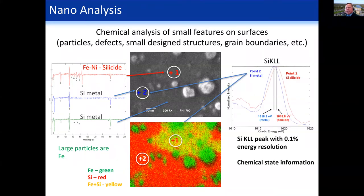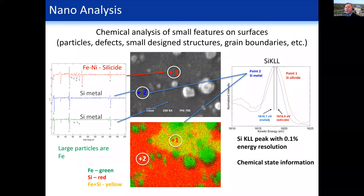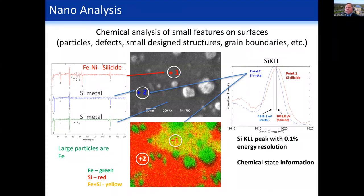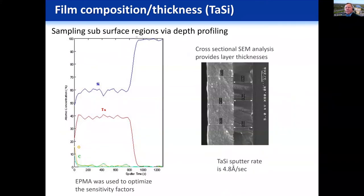Another thing you can do by Auger is chemical state analysis. With the new instrument we have high energy resolution. Looking at the silicon KLL line, we can see different chemical functionality — the silicon metal has a kinetic energy relating to metallic silicon, whereas the silicide is shifted, and the kinetic energy is in accord with what you'd expect. A nice example of small-spot analysis by Auger.